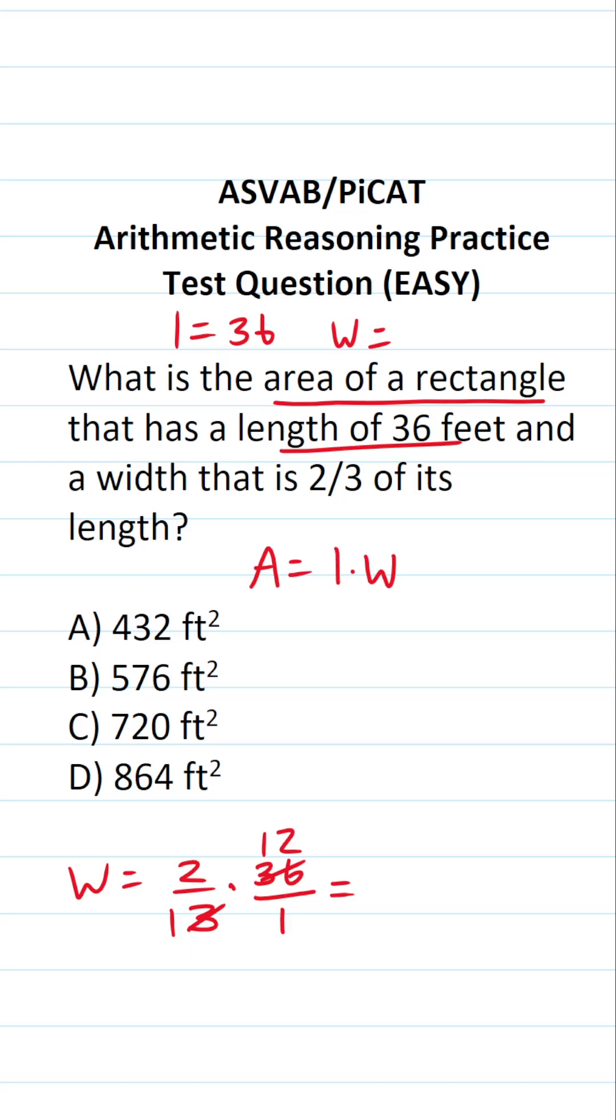Two divided by one is just two. 12 divided by one is just 12. Two times 12 is 24. As you can see, by doing that, it makes the math very simple.